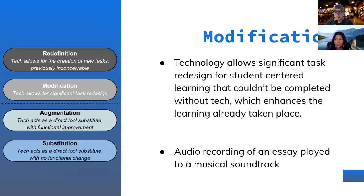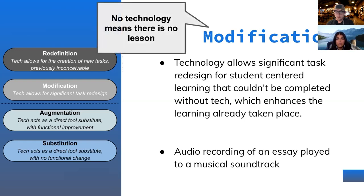Modification is the first step into the transformation stage of the SAMR model. The technology allows for significant task redesign, enhancing the learning already taking place. Students start getting into creative and critical thinking. For example, an audio recording of an essay played to a musical soundtrack from the era being studied — like the Roman Empire — requiring students to think creatively across every facet of what they're creating. If you don't have technology, you don't have the lesson.